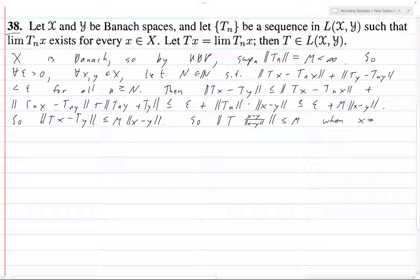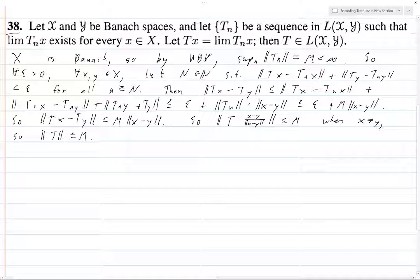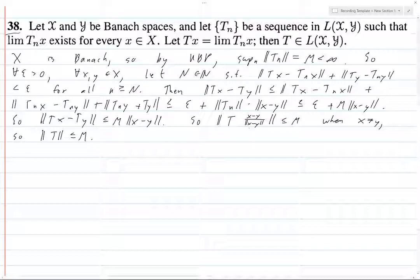So norm tx minus ty over norm x minus y is less than or equal to m. This is of course when x is not equal to y. And so what does that tell us? It tells us precisely that the norm of t is less than or equal to m. Because these are all things of norm 1. Yeah, you can take anything of norm 1 and write it in this form and it's going to be less than or equal to m.